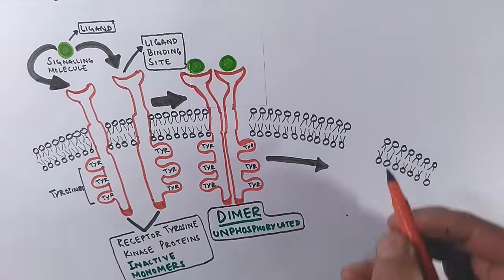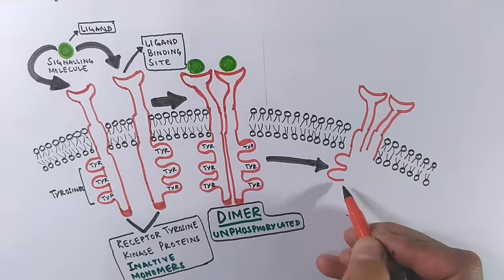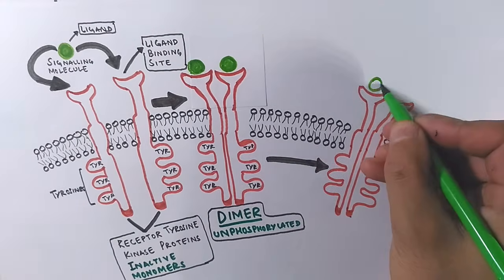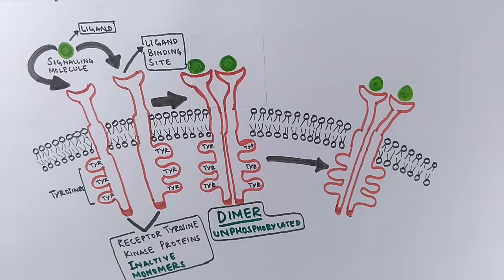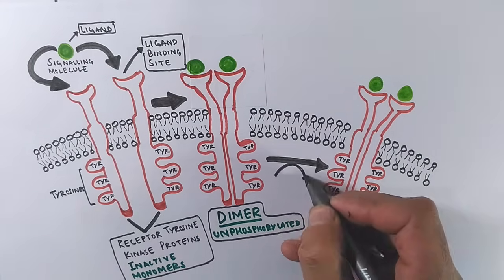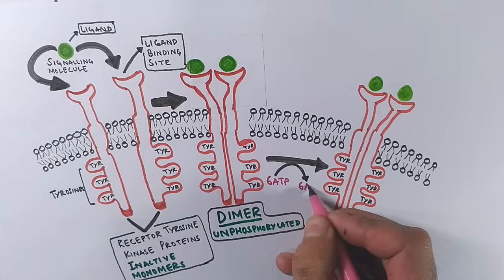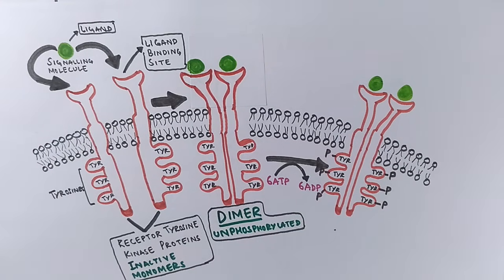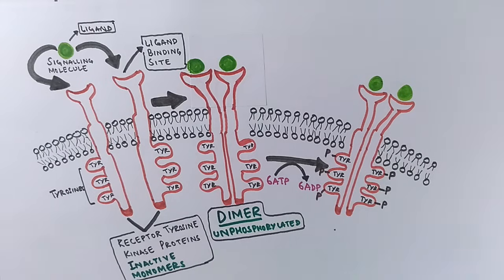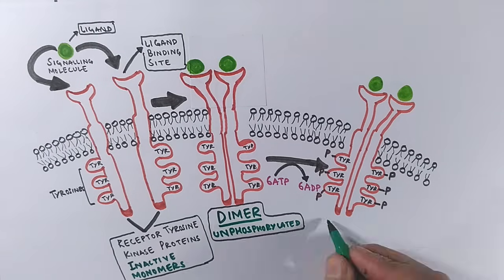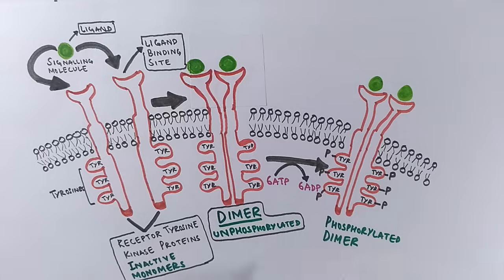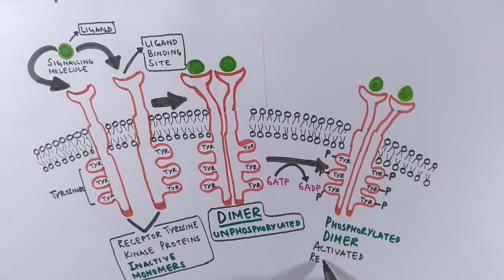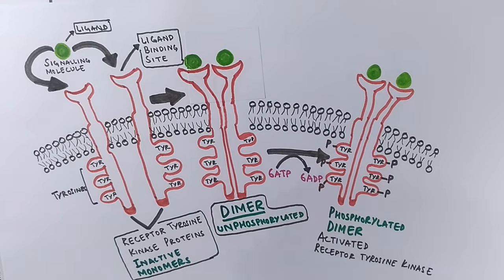It needs phosphorylation, which is achieved by the kinase activity of the receptors as it transfers phosphates from ATP to the tyrosine amino acids present on receptors, as you see in the reaction. Now we have a phosphorylated dimer, which is the activated form of receptor tyrosine kinase.